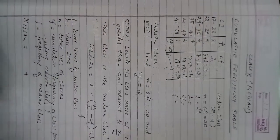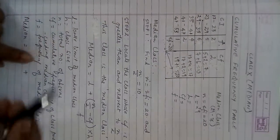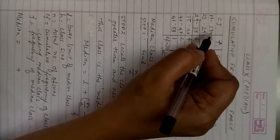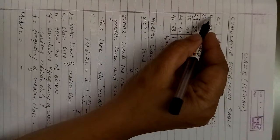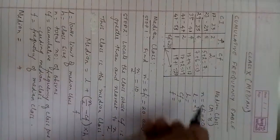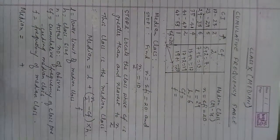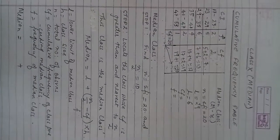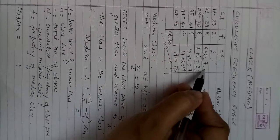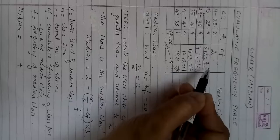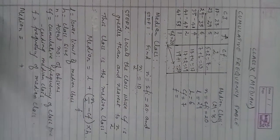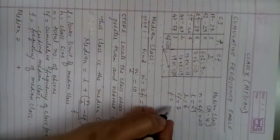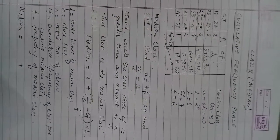h is the class size, found by subtracting the lower limit from the upper limit. For example, 23 minus 17 gives a class size of 6, so h equals 6. cf is the cumulative frequency of the class preceding the median class, which is 7. f is the frequency of the median class — for 29 to 35, the frequency is 6.